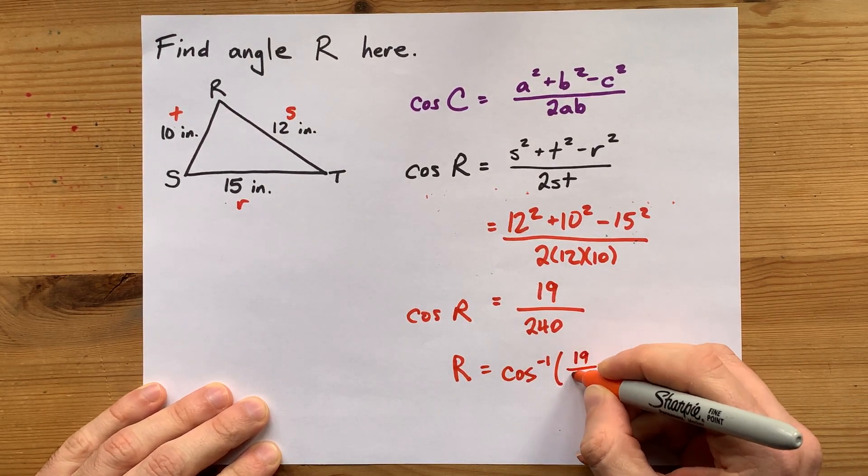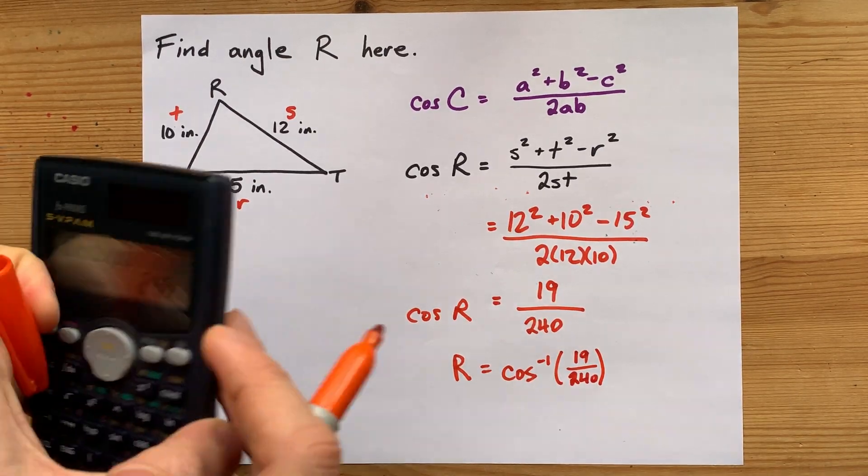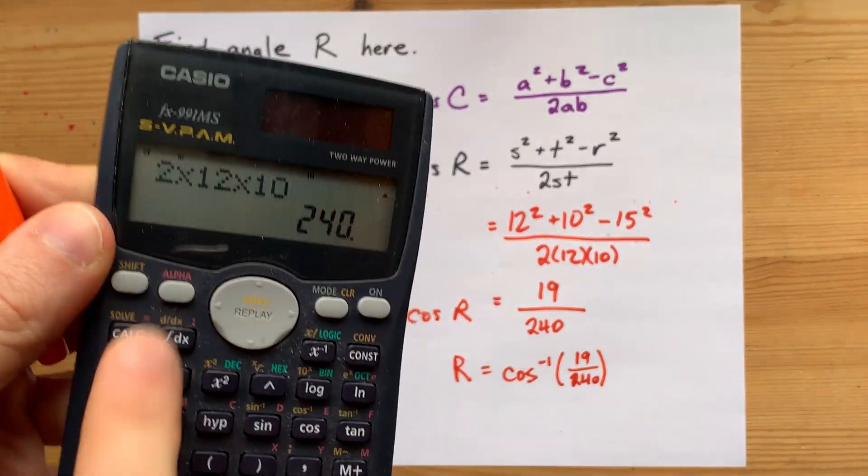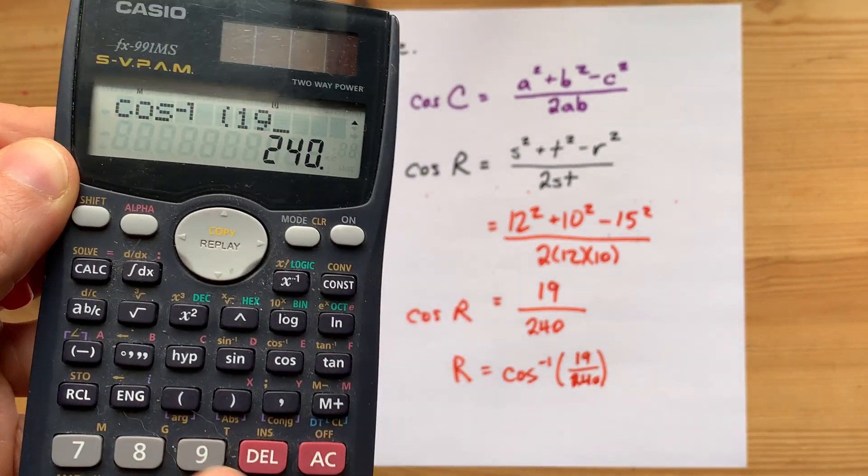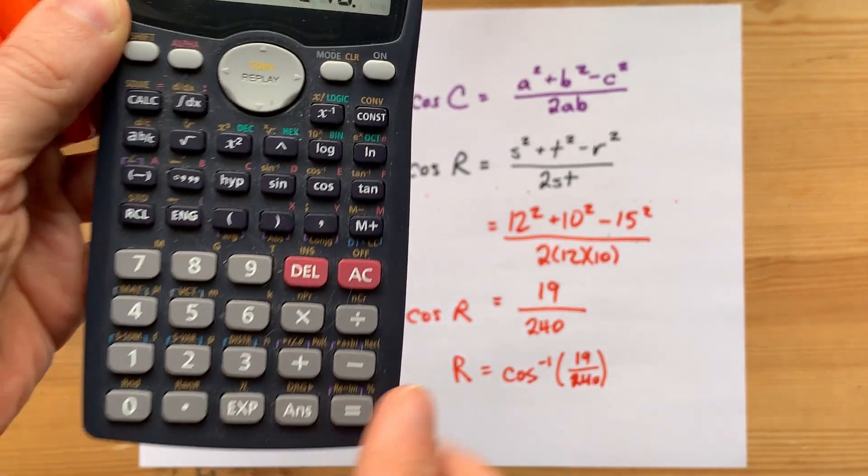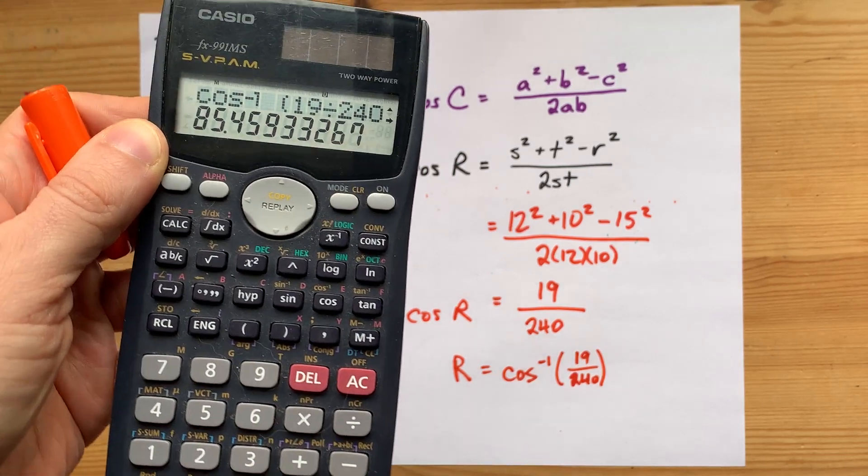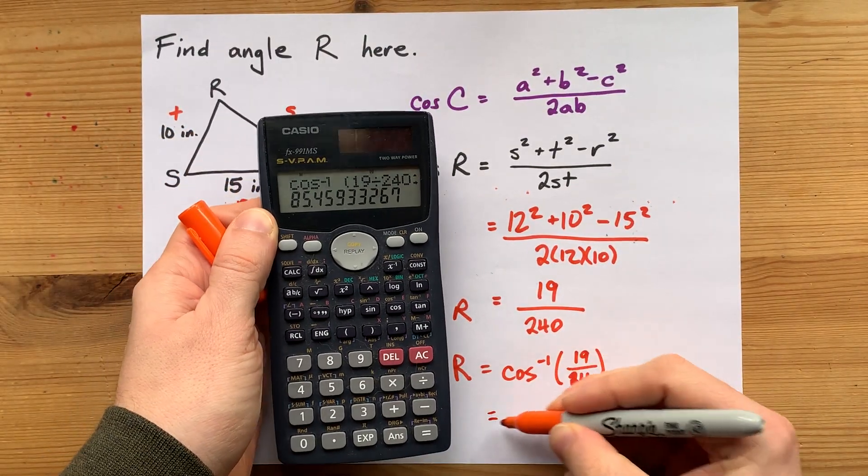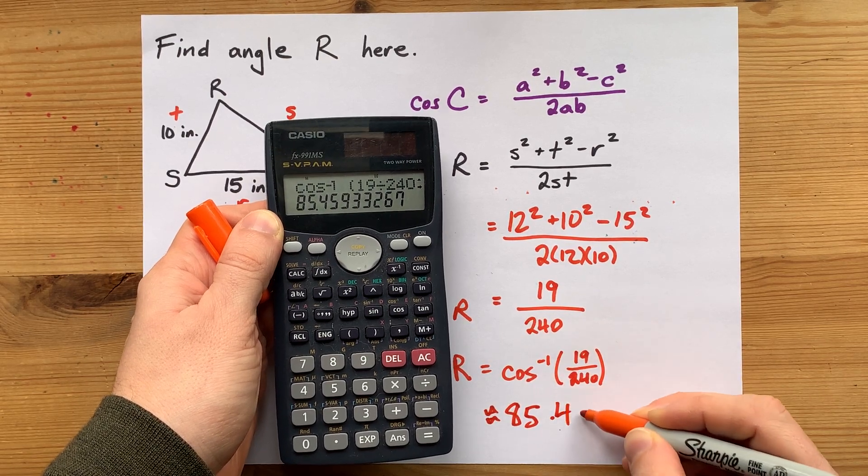And I'm just going to send that 19 over 240 into it. I got shift cos, cos to the negative one of 19 over 240. Now I could have gotten the decimal for that and type the decimal instead. But I figure it's just as easy to put the dividing in there. And so the answer I end up with is about 85.46 degrees.